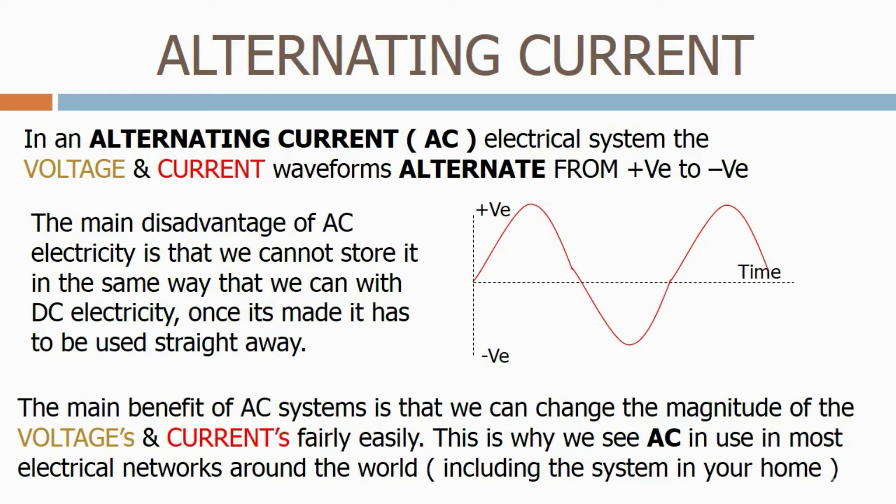The main benefit of AC systems is that we can change the magnitude of the voltage and currents fairly easily. This is why we see AC in most electrical networks around the world, including the system in your home.